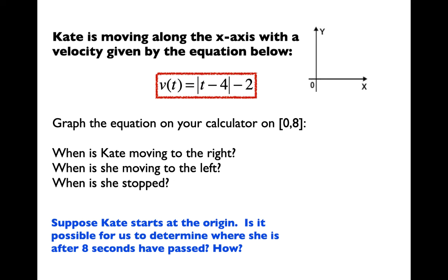Kate is moving along the x-axis with a velocity given by v(t) equals the absolute value of t minus 4, minus 2. We can graph this on your calculator on an interval from 0 to 8. We want to see when Kate is moving to the right, when she's moving to the left, and when she has stopped. After that, we'll determine where she is after eight seconds have passed.